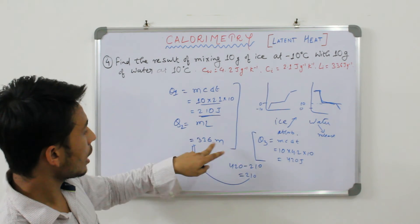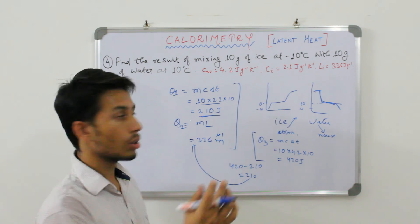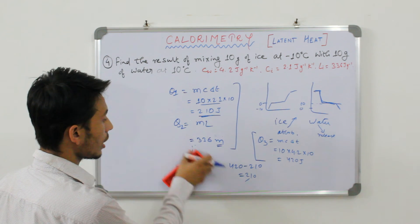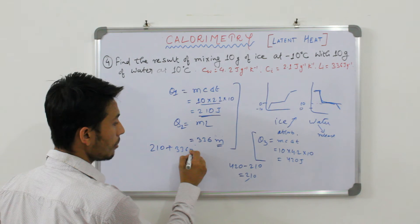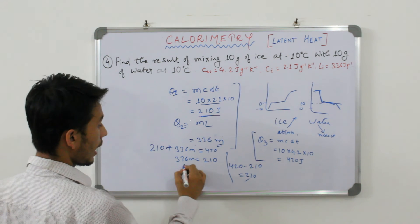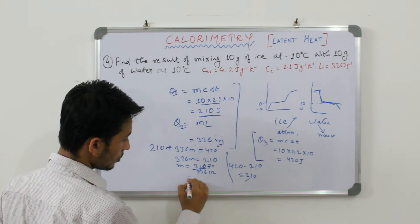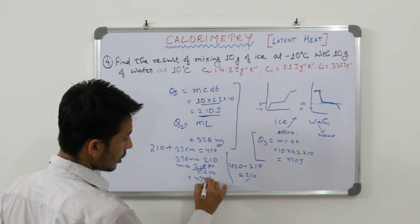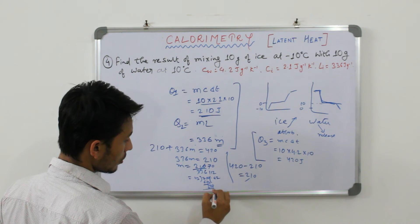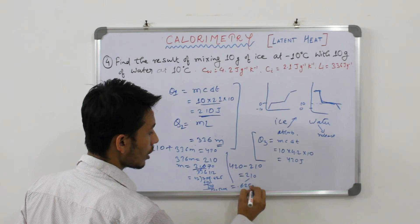We know the specific latent heat of ice is 336 joule per gram, so all the mass cannot melt. We need to find how much ice melts. By conservation of energy: 210 + 336M = 420, so 336M = 210, giving M = 210/336 = 0.625 grams of ice will melt. The final temperature of the resulting mixture will be 0 degrees centigrade.